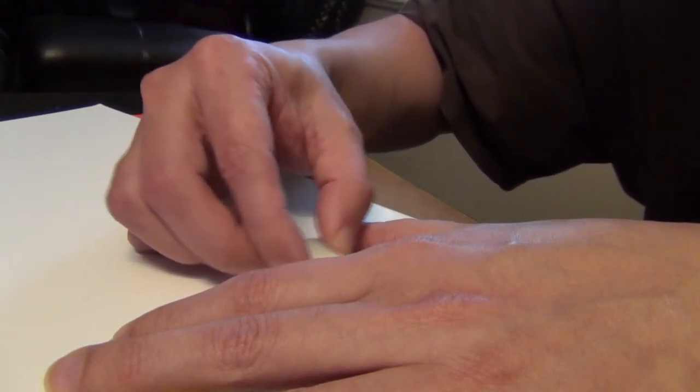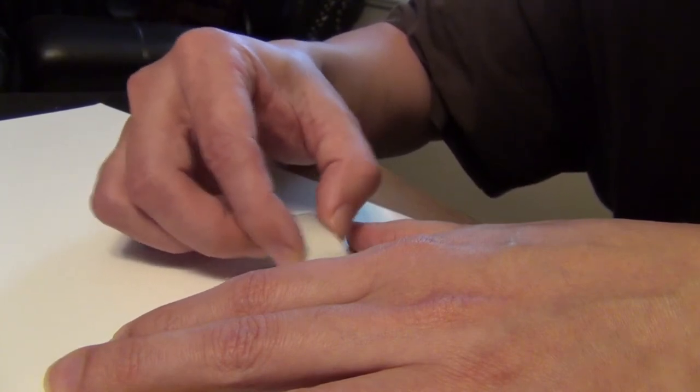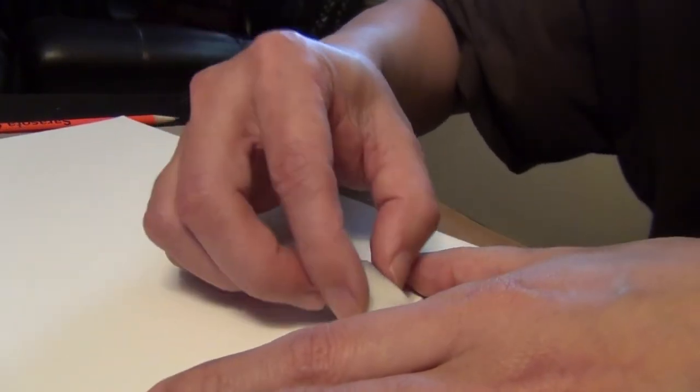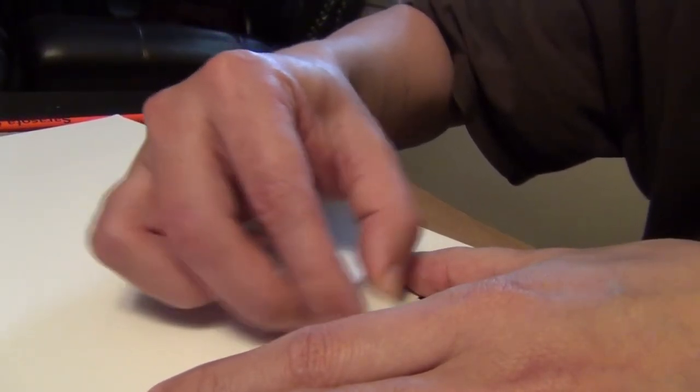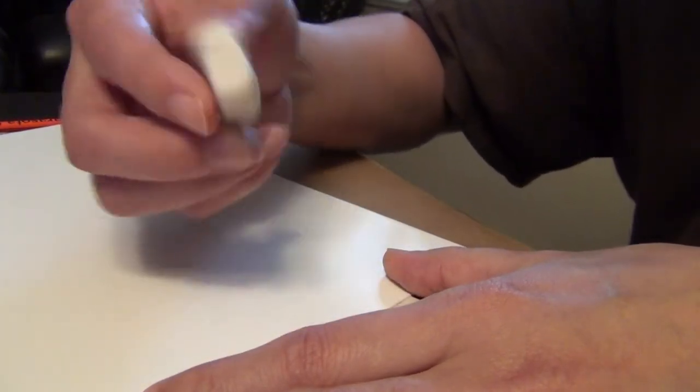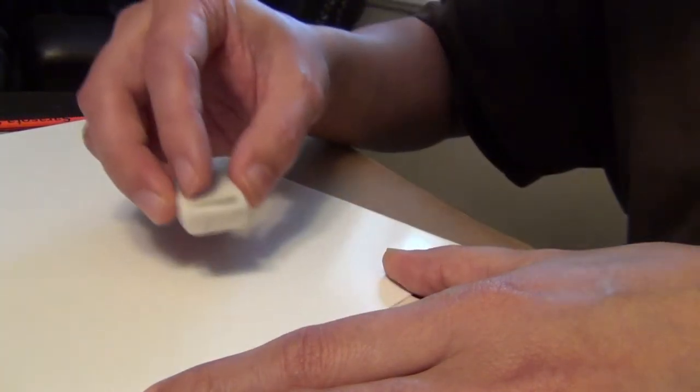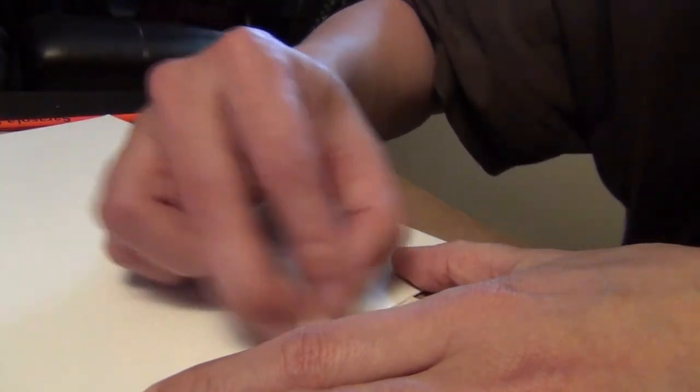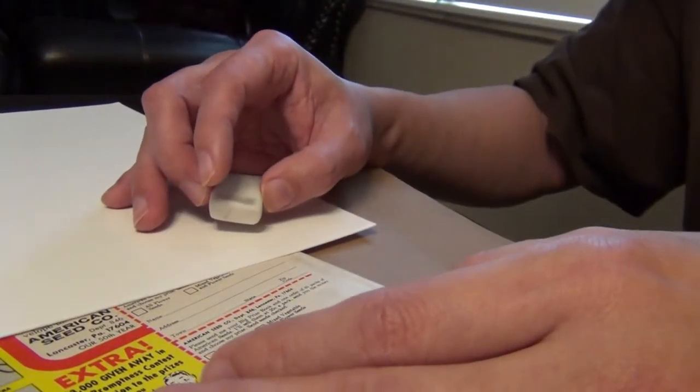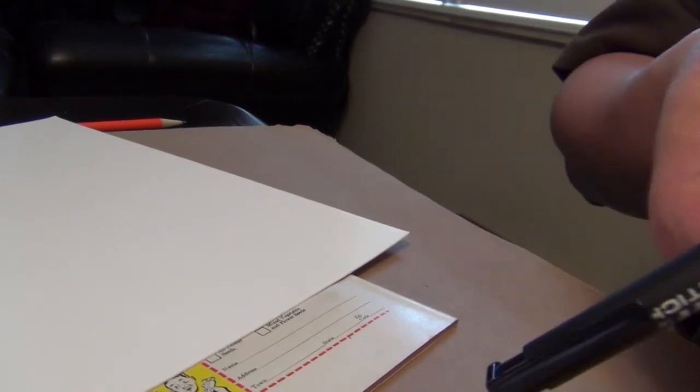So one other thing as you're erasing the area, be mindful that there will be an indentation left in that area and it's not something that you can completely undo unless you press the book. As long as you recognize that limitation to what you're doing, you'll be fine. There's a hard to get to spot because the indentation I think is a little bit deeper. So I switch over to using the eraser pen.